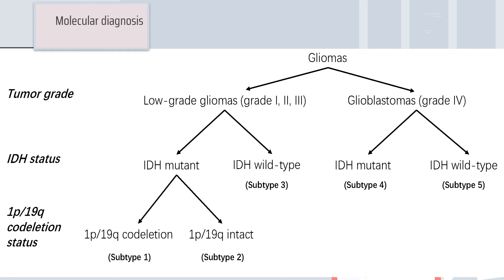There are two different types of mutation occurring in gliomas: IDH mutation status — either wild type or mutant — and co-deletion of the chromosome 1p/19q.